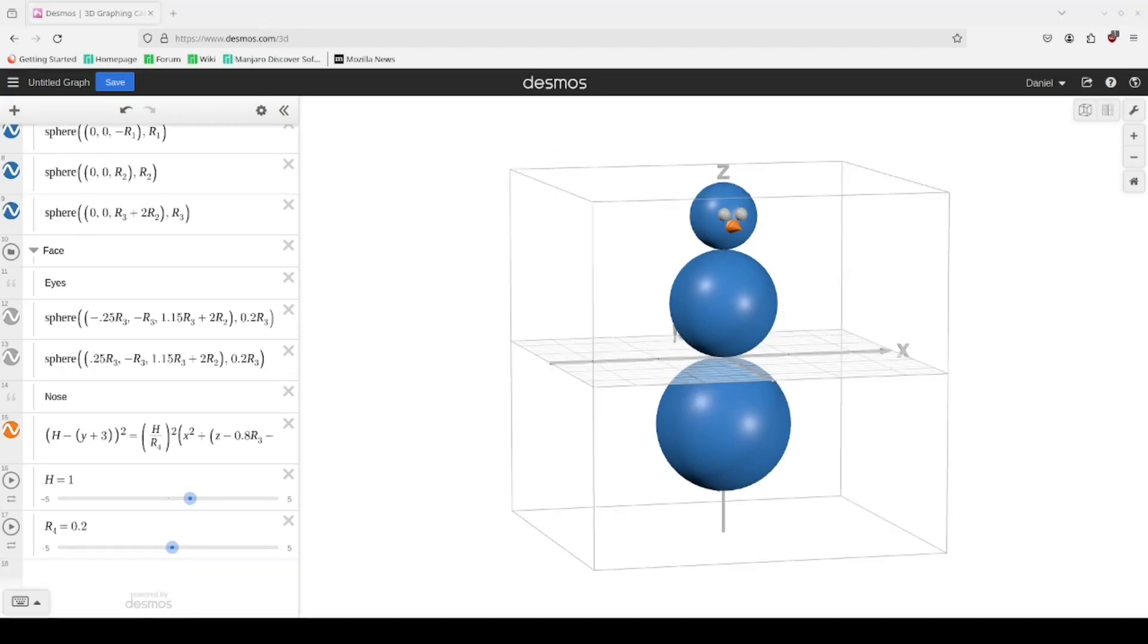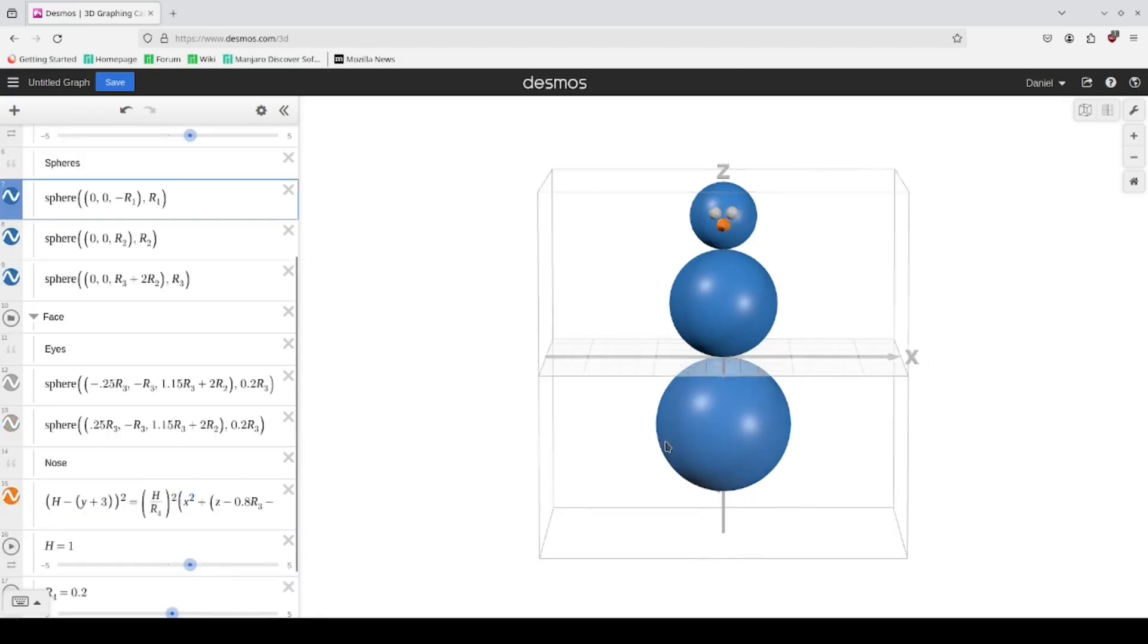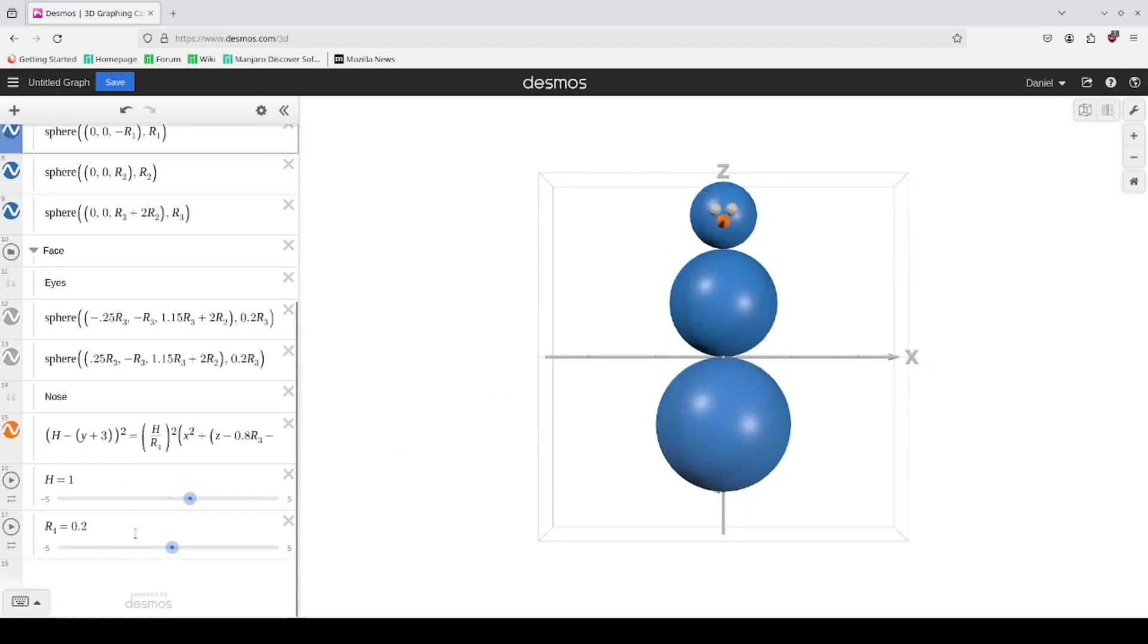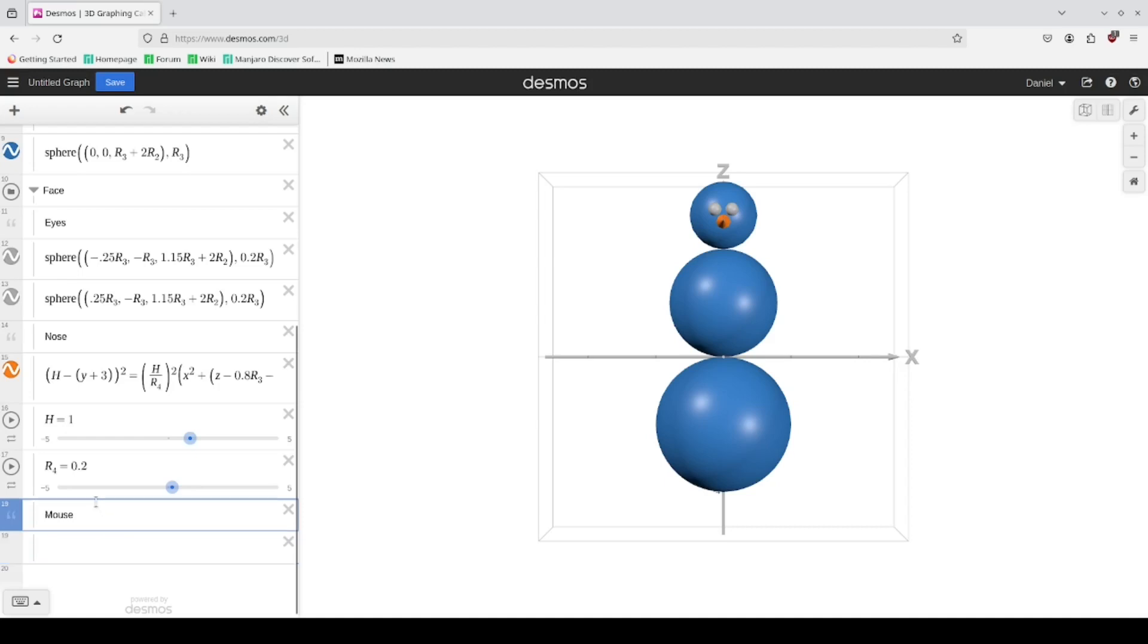All right, for the mouth I'm going to go with a parabola for it. We're going to be looking at it from the xz view, so for that let's make a section for mouth here.